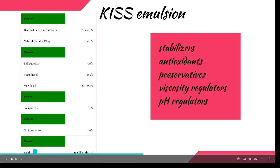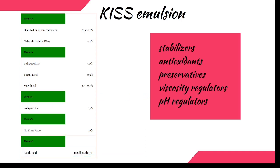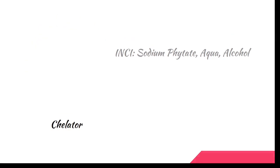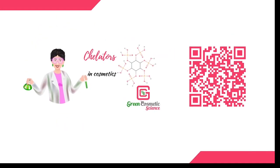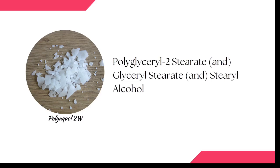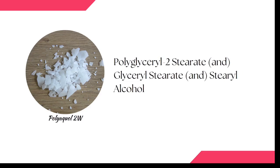For the sake of simplicity, we are going without any scent — no fragrance oil or essential oil here. We kept the formulation really simple. We are using one chelator with the INCI name sodium phytate aqua alcohol; this is our PA3. If you don't know exactly what chelators are and what they do in formulations, you can scan the QR code to go to the presentation and video about chelators. Then obviously we need an emulsifier, and here we are using Poly Aquol 2W.